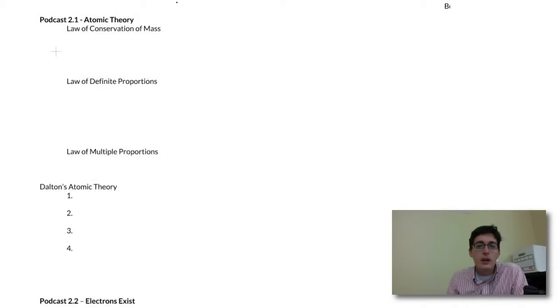Okay, welcome to podcast 2.1. This is chapter 2 where we're looking at atoms in the atomic theory and the periodic table. Before we can get into the atomic theory, this is objective 2.1 in your notes, we need to be looking at some of these laws that build the foundation for the atomic theory.